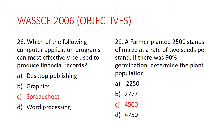Question 29: A farmer planted 2500 stands of maize at a rate of two seeds per stand. If there was 90% germination, determine the plant population. If there were two seeds per stand and 90% germination, then 2250 stands germinated — that is 90% of 2500. But because there are two seeds per stand, you multiply by two, giving you 4500. That is the plant population, since each stand has two maize plants. The answer is C.